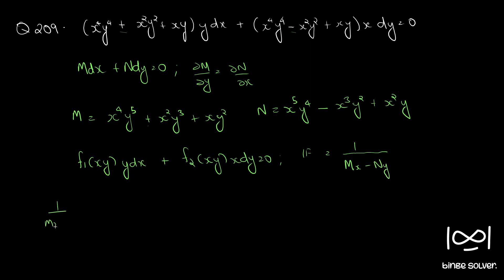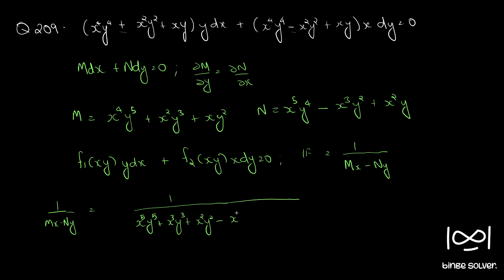So 1 by (Mx minus Ny) equals x⁵y⁵ + x³y³ + x²y² minus x⁵y⁵ + x³y³ minus x²y². The x⁵y⁵ terms cancel out and x²y² terms cancel out. So our integrating factor is 1 by 2x³y³.